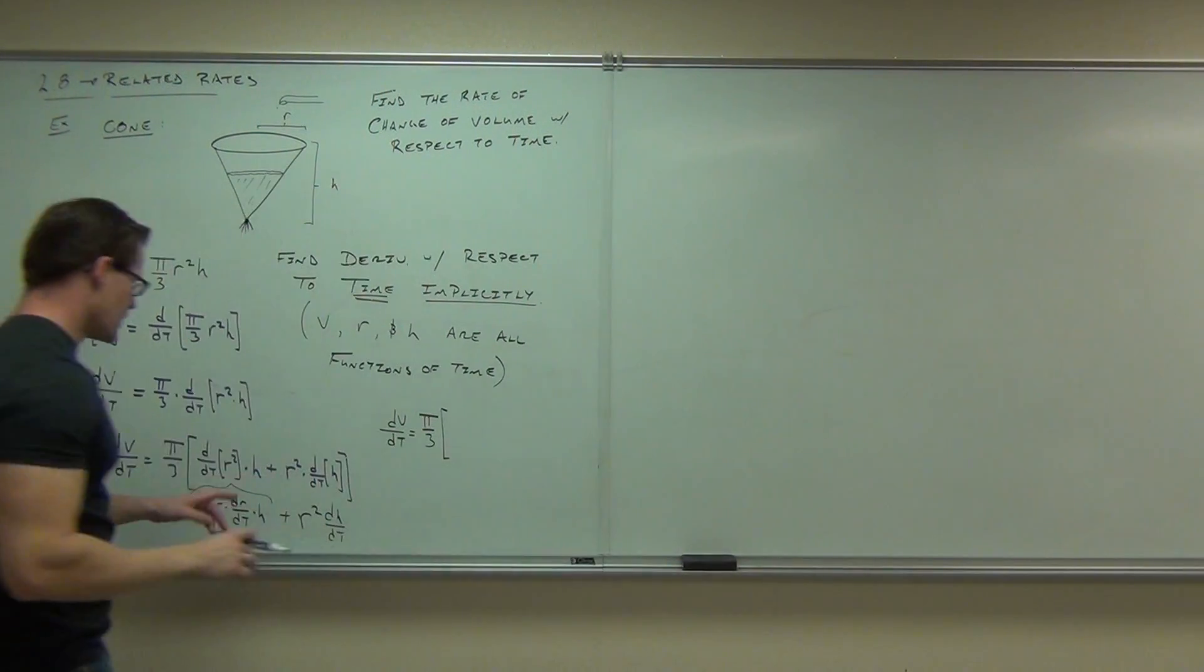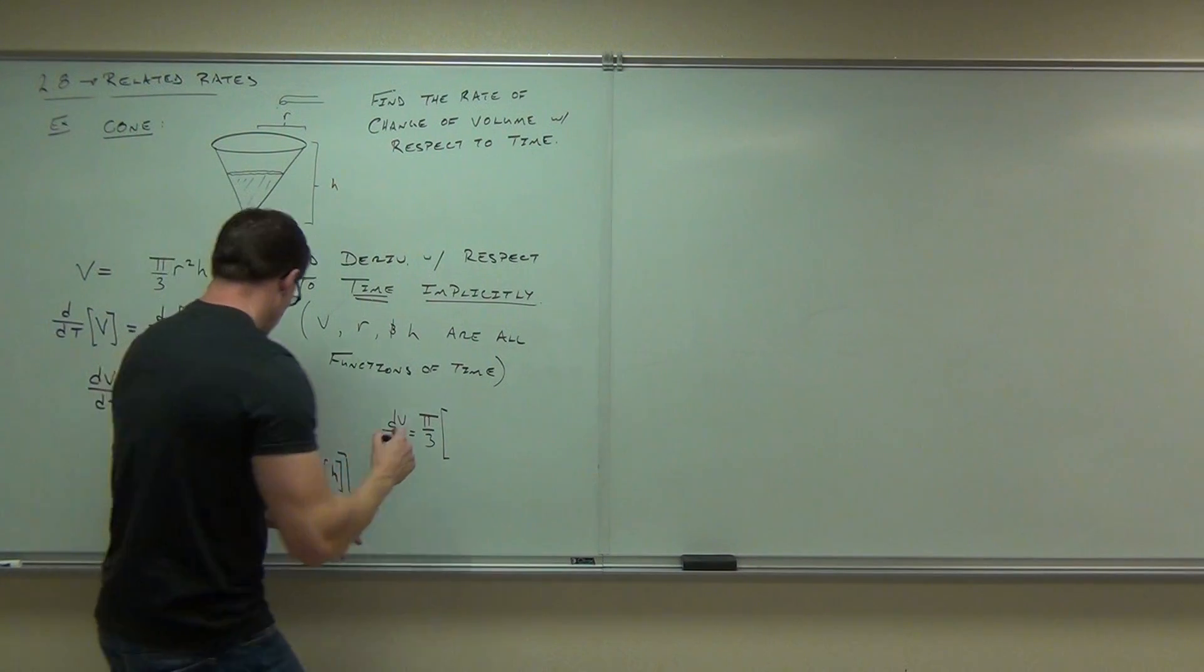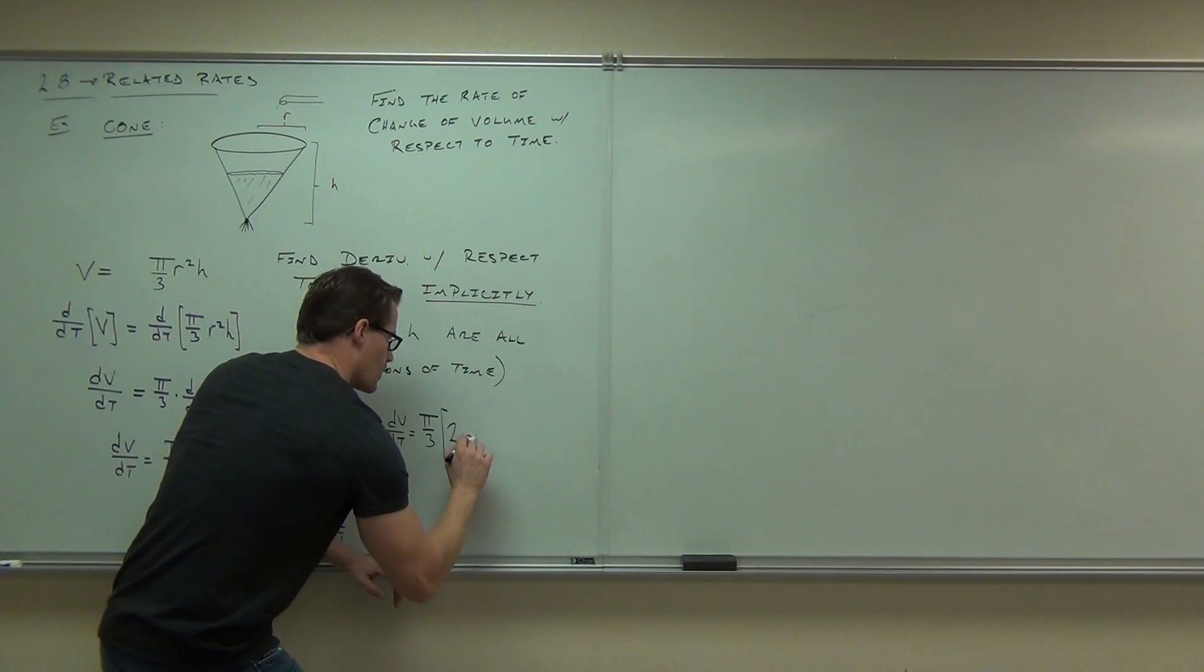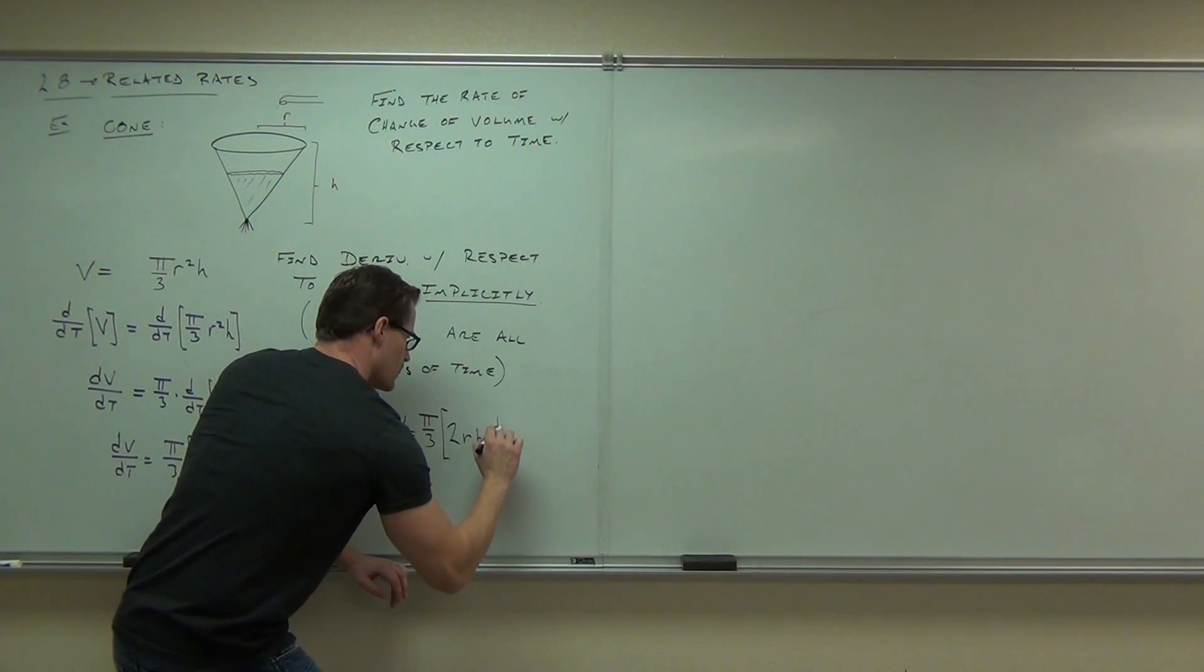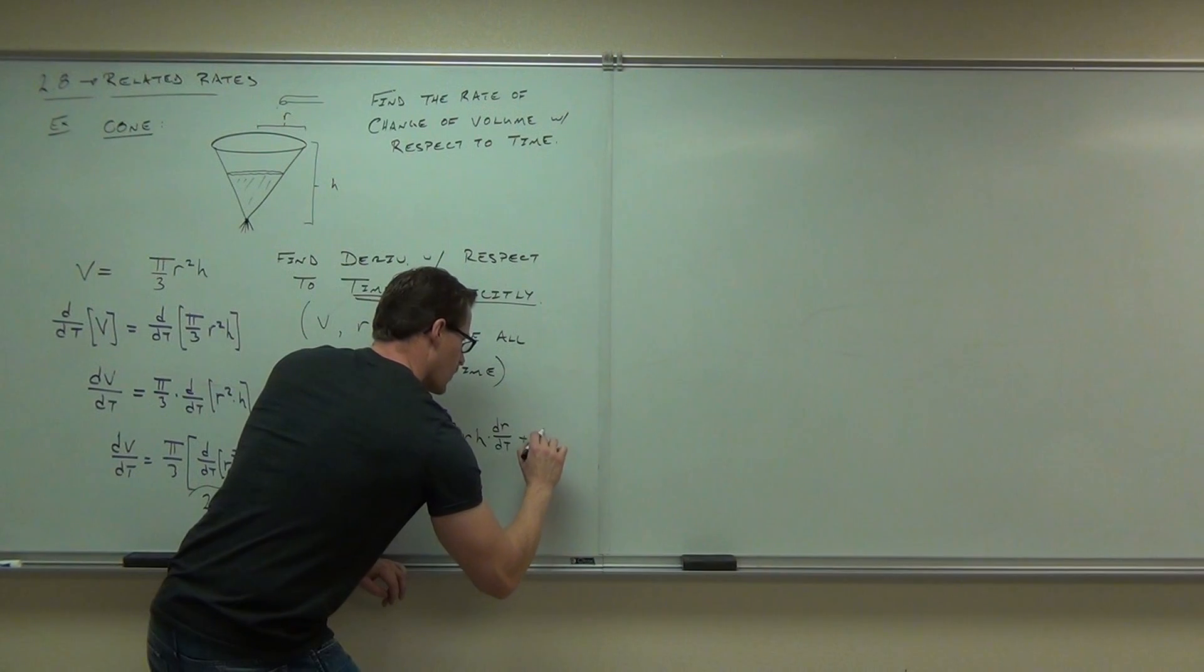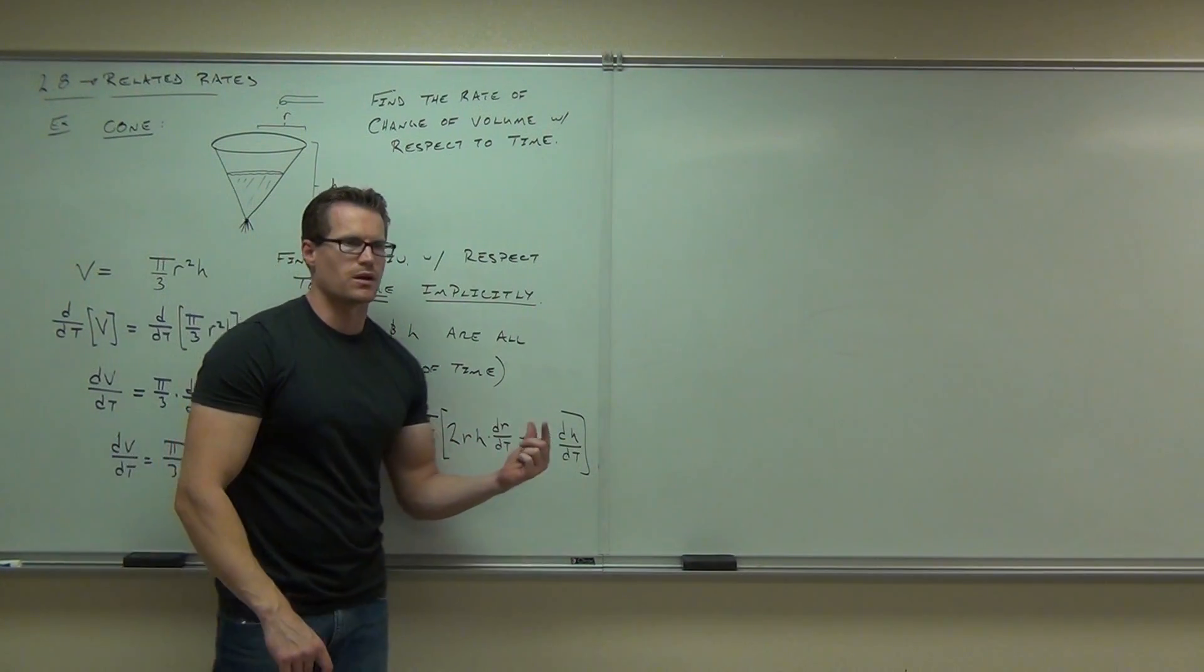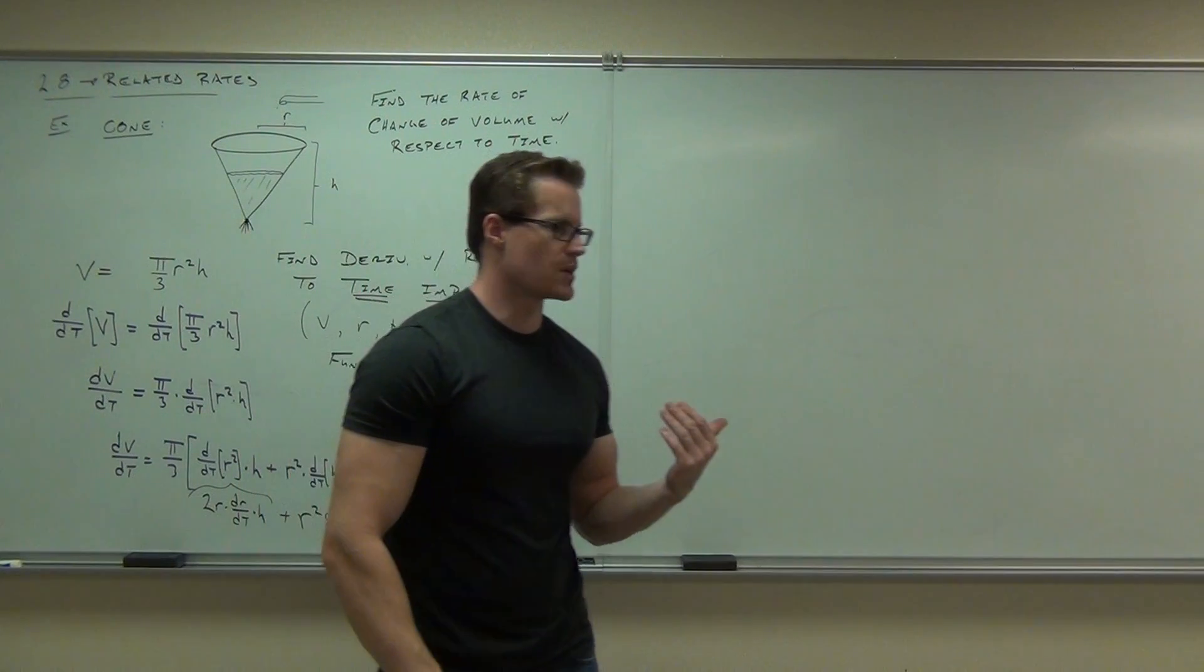So if we pretty this up just a little teeny bit, I'll probably put the H in front of the dR, dt, just because that's how we like to write it. So 2R, H, dR, dt, plus R squared, dH, dt. Now, if you didn't pull out the pi over 3, you have a pi over 3 here, and you have a 2 pi over 3 there. Is it any different? No, it's the same thing.